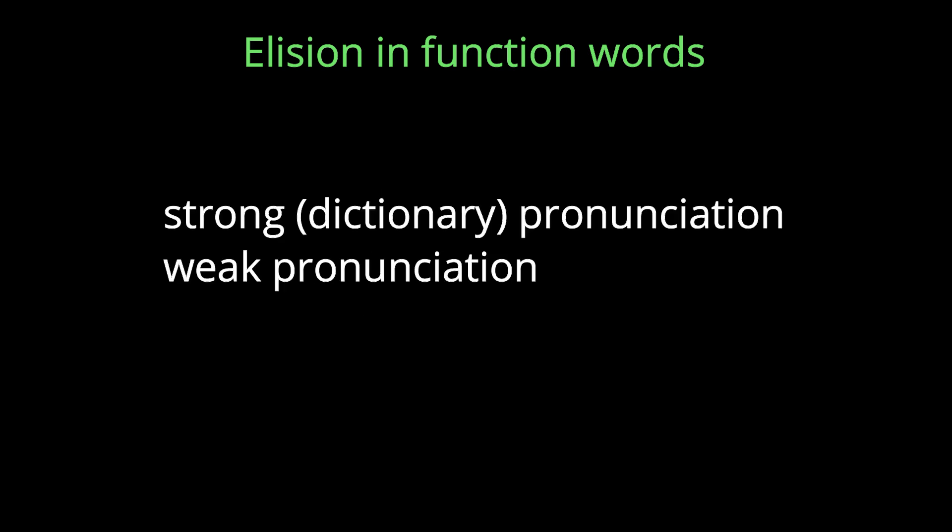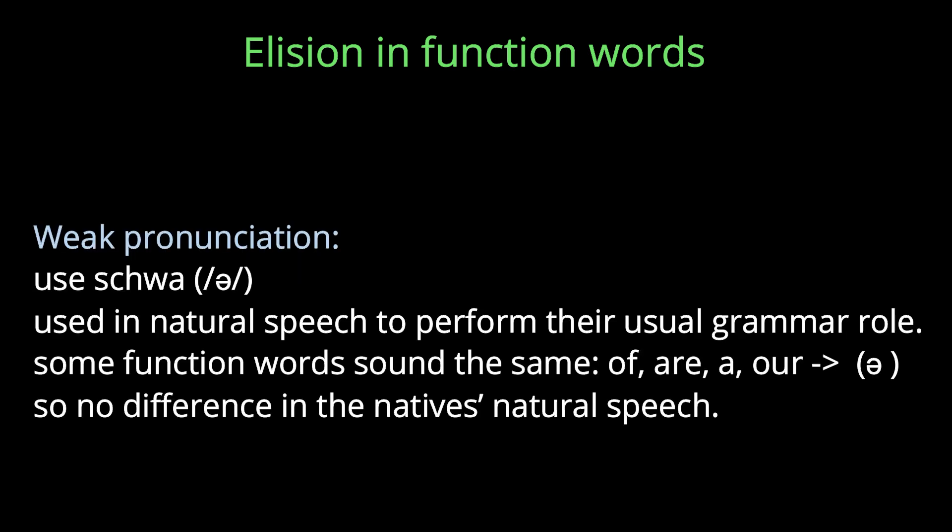Function words have two pronunciations: the strong dictionary pronunciation and the weak pronunciation. The weak forms use the schwa, which we examined in the section on the vowel schwa. The weak form is used in natural speech when function words perform their usual grammar role. When the weak form is used, many of the function words sound the same. Consequently, we will not hear the difference in the native's natural speech, so we should not try to pronounce them differently when we speak.